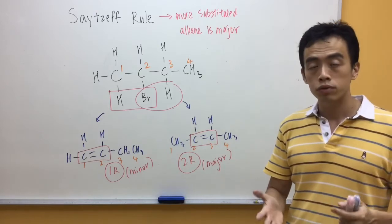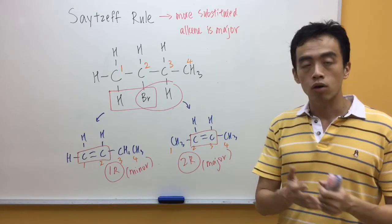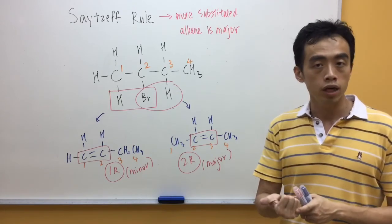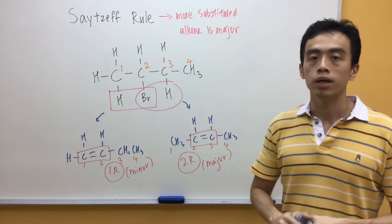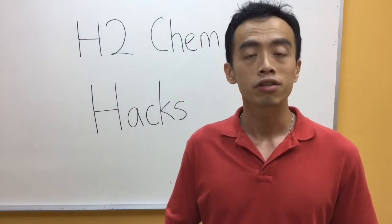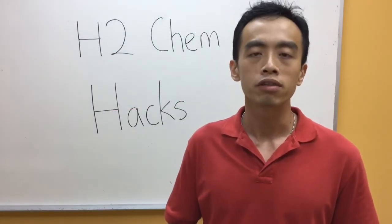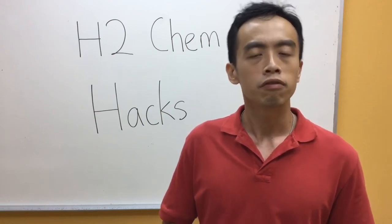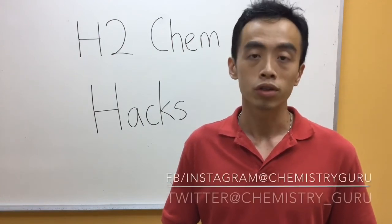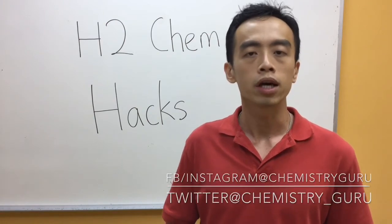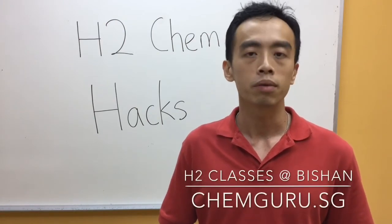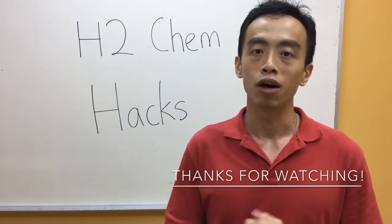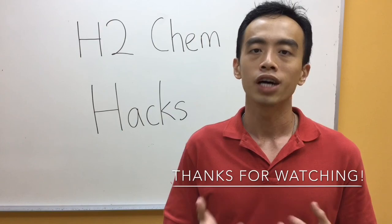And so, this is how we use the CZF rule to determine the major and minor products for the elimination reaction of haloalkanes or alcohols to form alkenes. If you have enjoyed this video, please share this with your friends. To learn more about H2 Chemistry, please subscribe to my YouTube channel, follow me on Facebook, Instagram, or Twitter. If you want to know more about my H2 Chemistry classes, please visit my website. Thank you for watching H2ChemX — I hope I've made H2 Chemistry simpler for you. I'll see you next time.